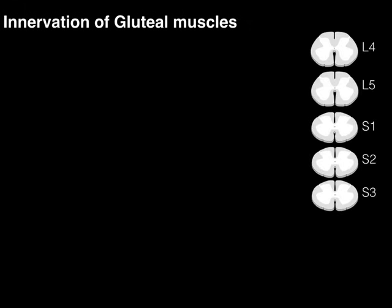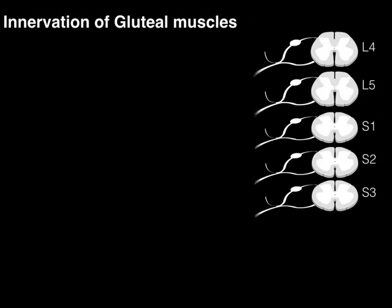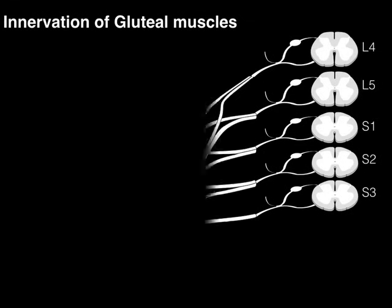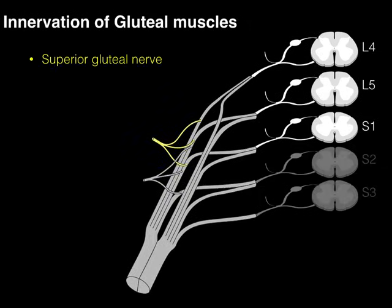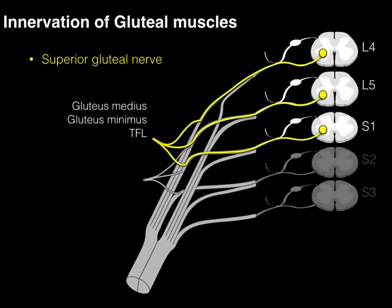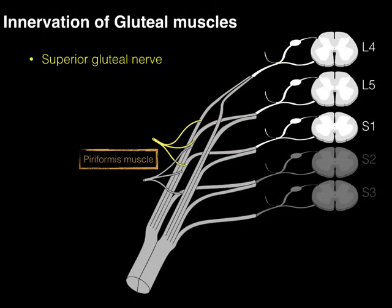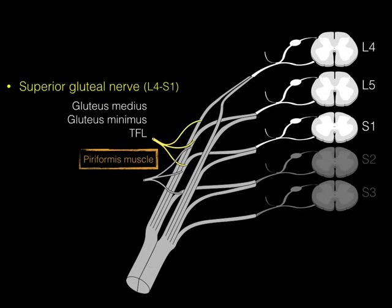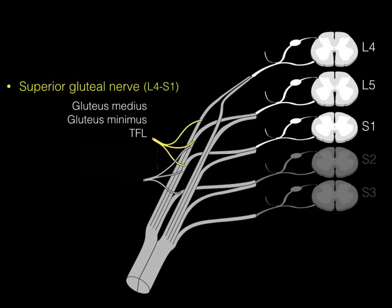The innervation of the gluteal muscles arises from the sacral plexus, at L4 to S3 spinal cord levels. We're going to focus on the superior and inferior gluteal nerves. The superior gluteal nerve comes from L4, L5, and S1. The motor neuron cell bodies arise in the ventral horn, come out the ventral rami, and course into the superior gluteal nerve to innervate three muscles: the medius, minimus, and TFL. The superior gluteal nerve gets its name because it courses above the piriformis.